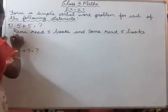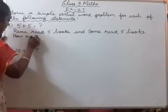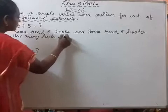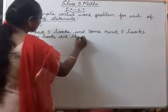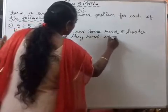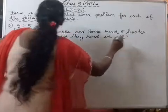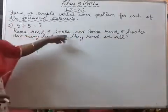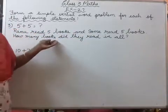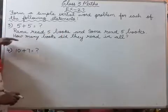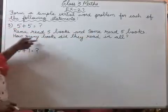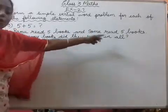How many books did they read in all? Okay, Ramu read 5 books, Somu read 5 books. Okay, total together how many books, both together how many books did they read? Okay. So, Ramu read 5 books and Somu read 5 books. How many books did they read in all? Okay,